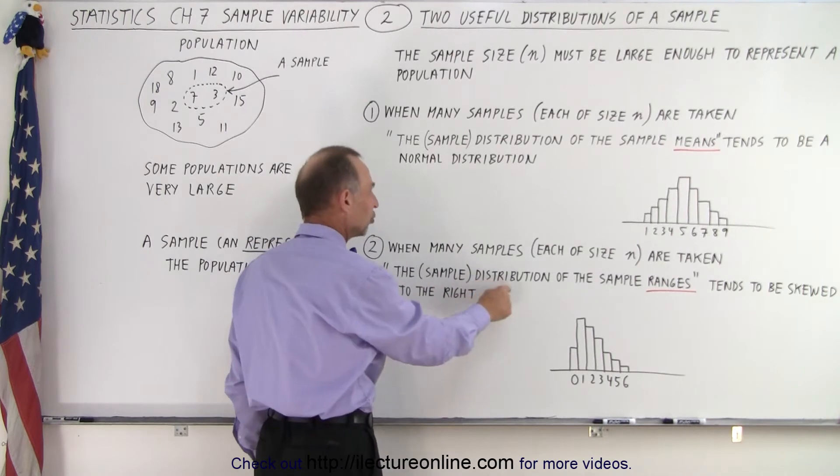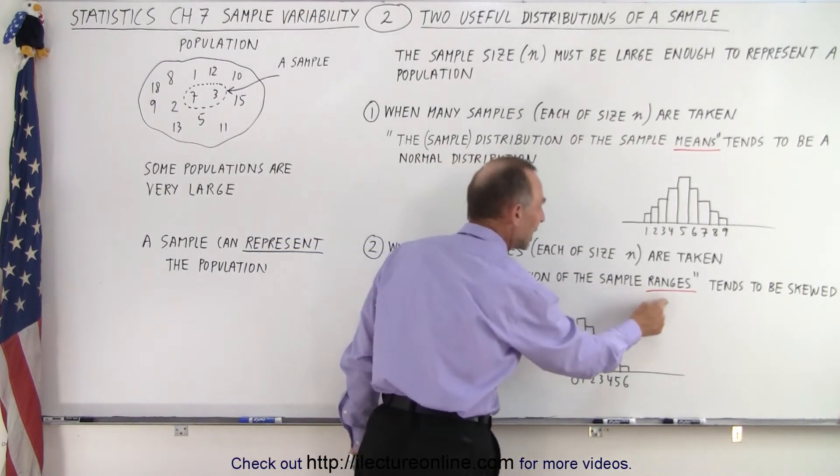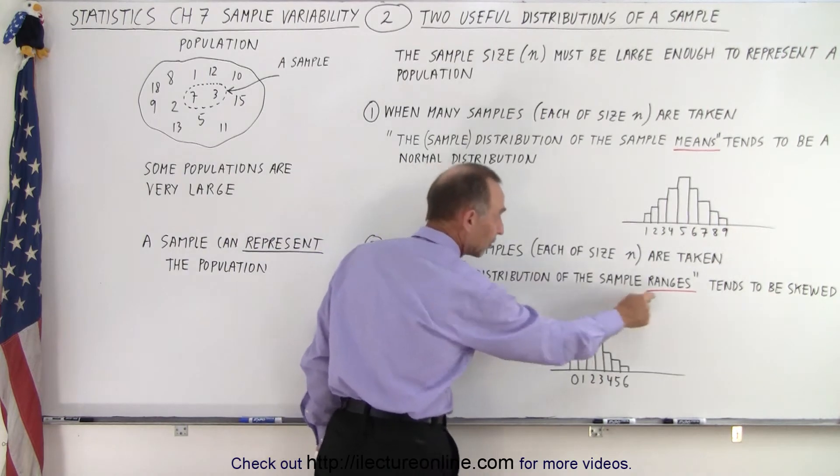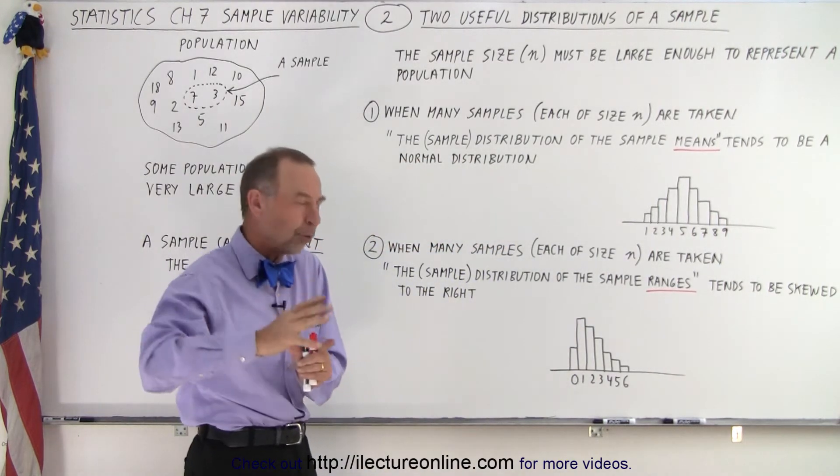We then have what we call the sample distribution of the sample ranges. Or we can read simply, the distribution of the sample ranges, but that tends to be skewed to the right.